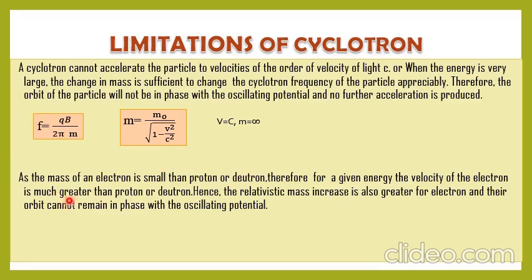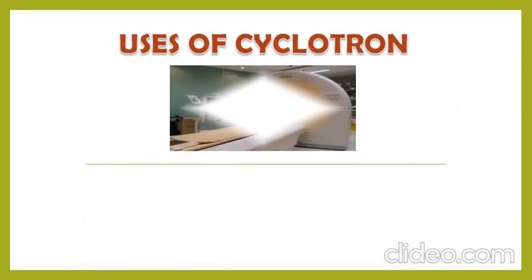Another limitation: since the mass of the electron is much smaller than that of a proton or deuteron, for a given energy the velocity of an electron is much greater. The relativistic mass increase is therefore much greater for electrons, so the orbit cannot remain in phase with the accelerating potential. This means we can accelerate protons and deuterons inside the cyclotron, but we cannot accelerate electrons. Within just a few revolutions, the electron's mass increases and the resonance condition breaks down.